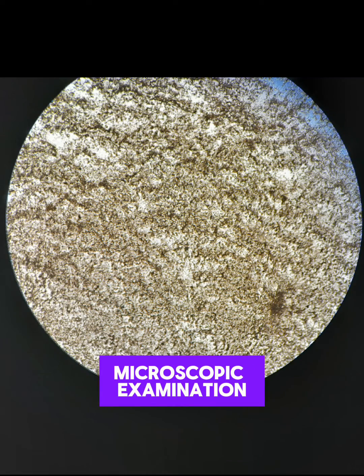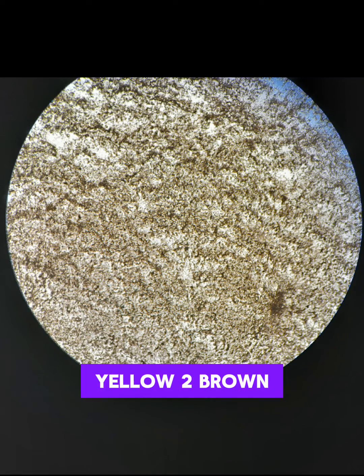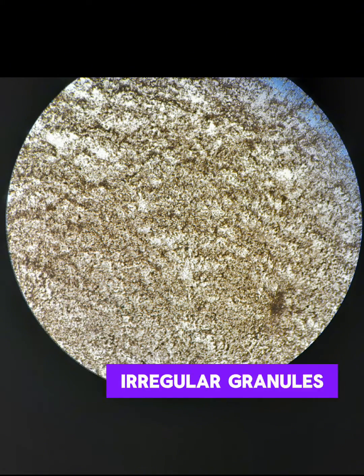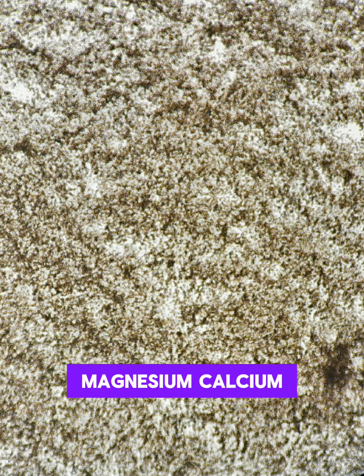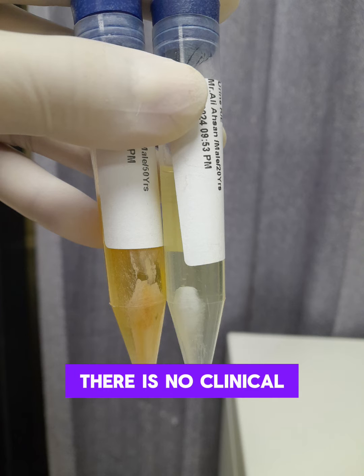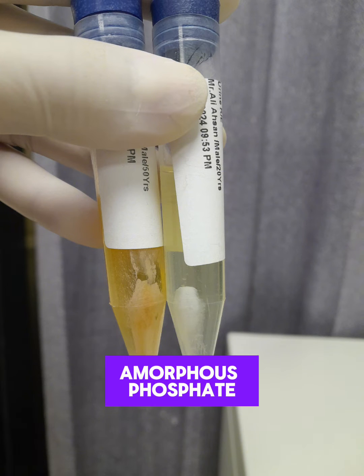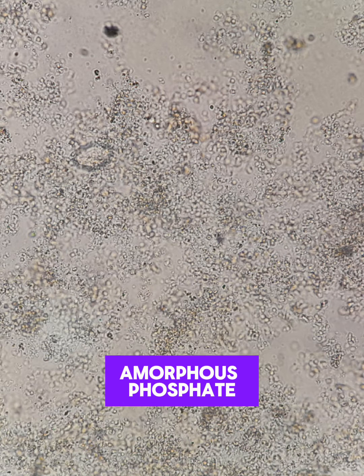Microscopic examination: yellow to brown irregular granules, which are formed from urate salts of sodium, potassium, magnesium, and calcium. There is no clinical significance of amorphous urates.